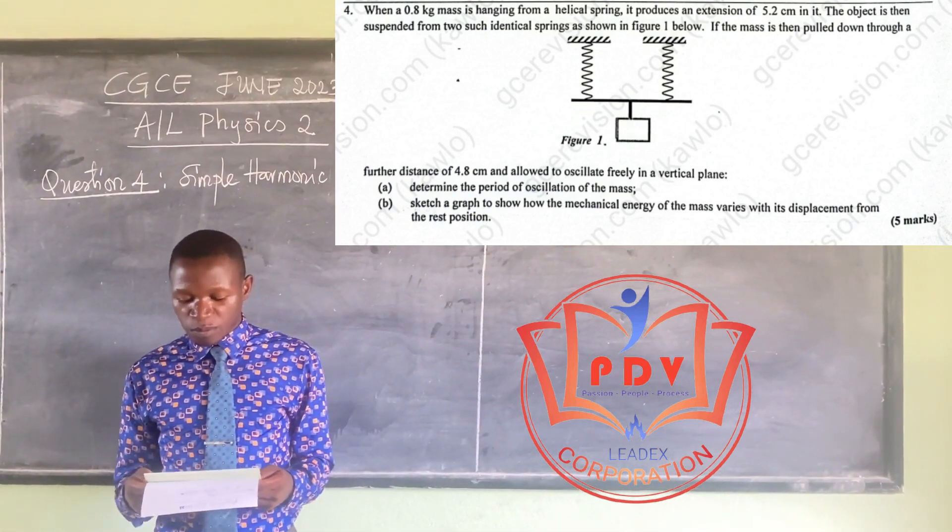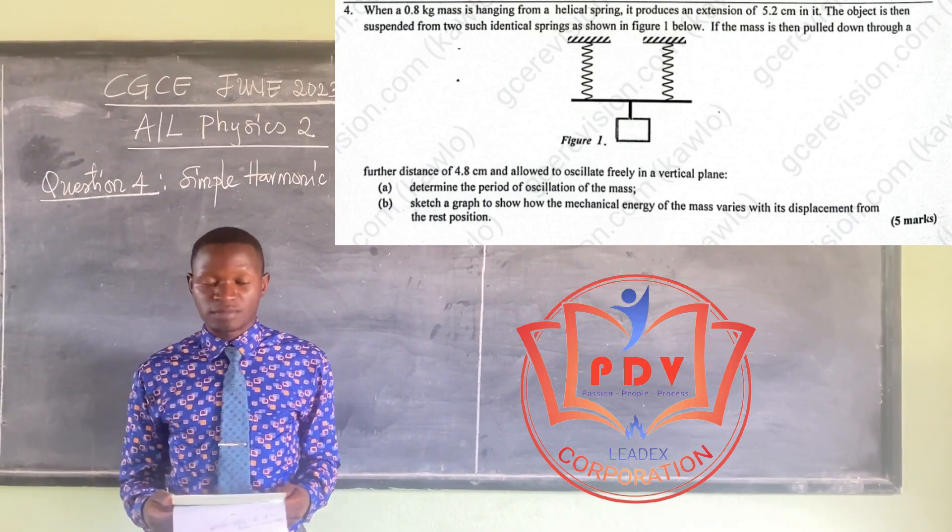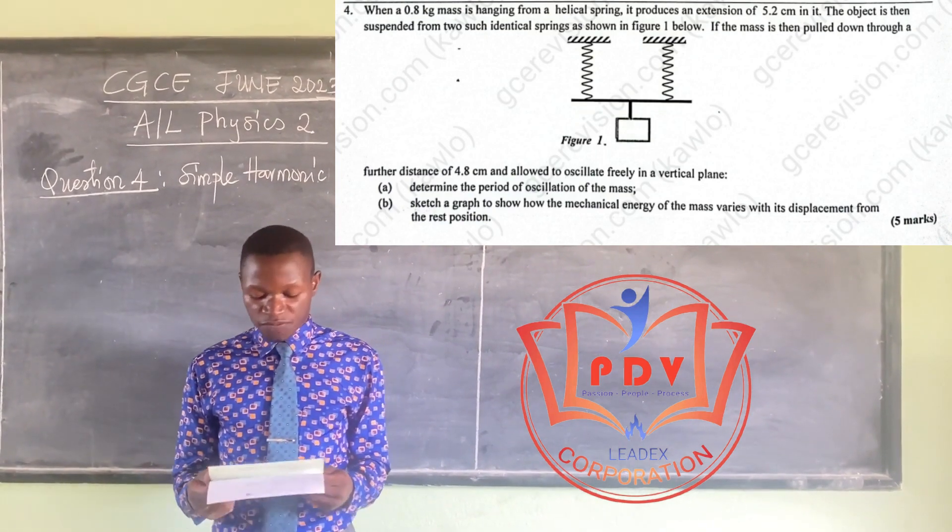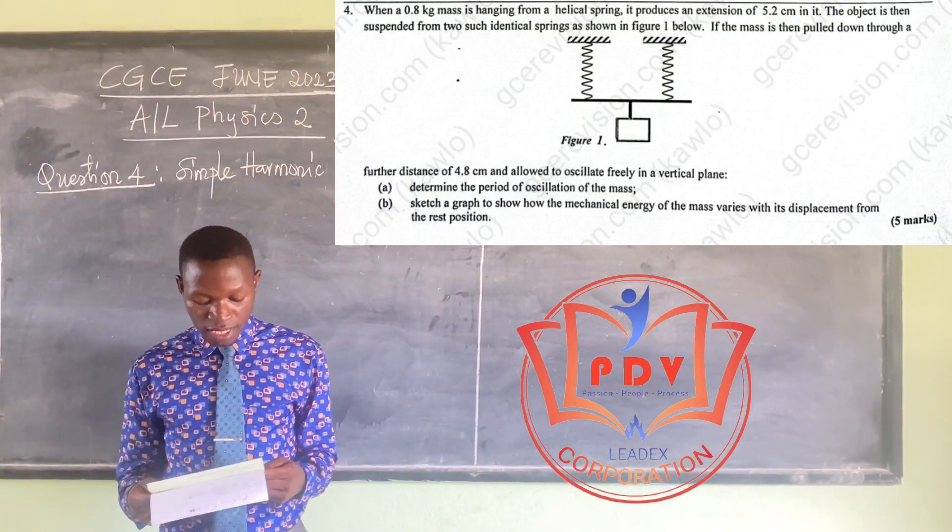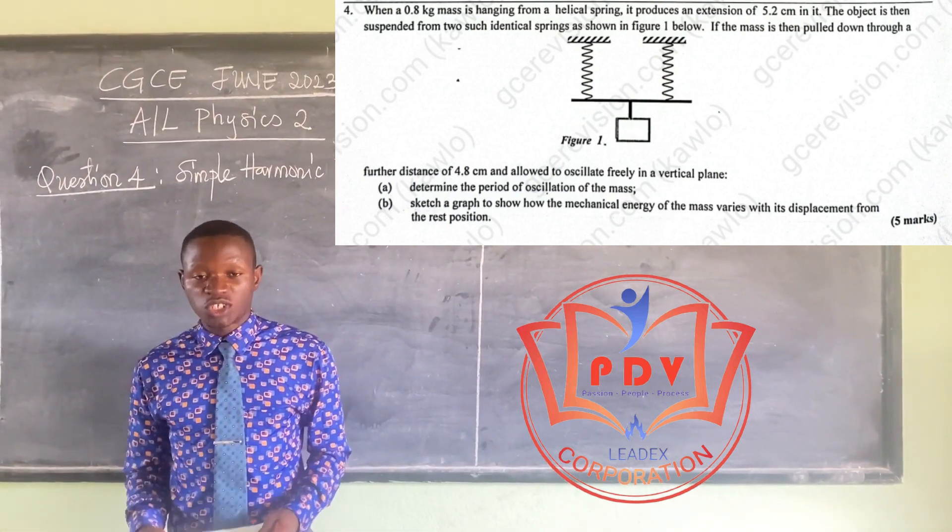If the mass is then pulled down through a further distance of 4.8 cm and allowed to oscillate freely in a vertical plane, determine the period of oscillation of the mass.